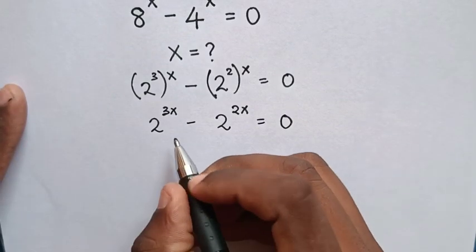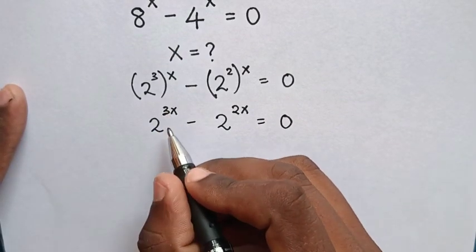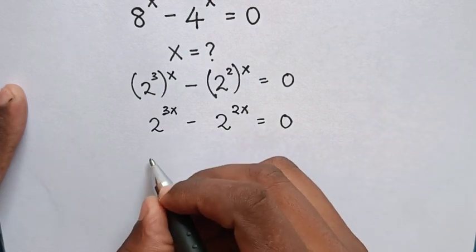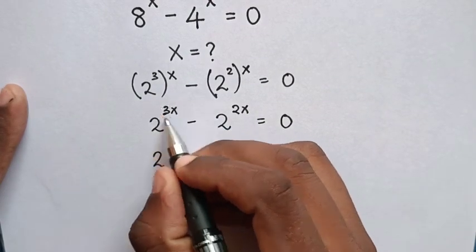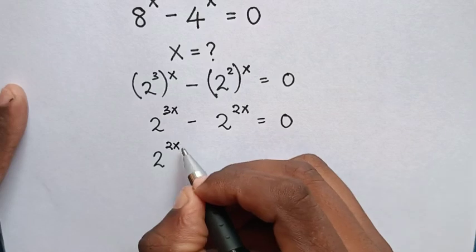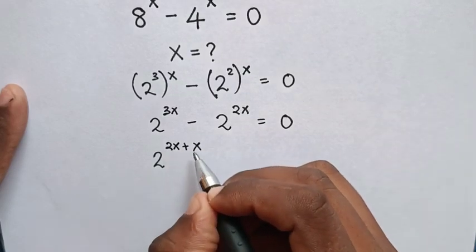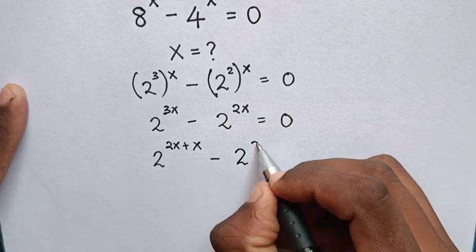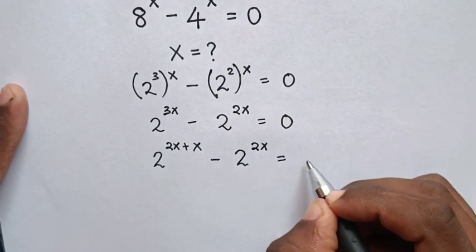Now, 2^3x to have the same form as 2^2x, it will be 2^(2x+x). So this becomes 2^(2x+x) - 2^2x = 0.